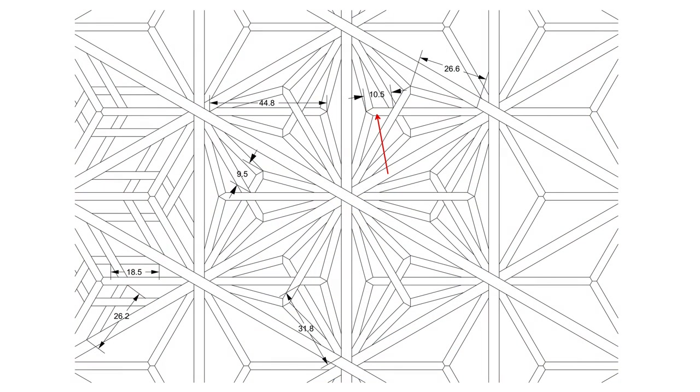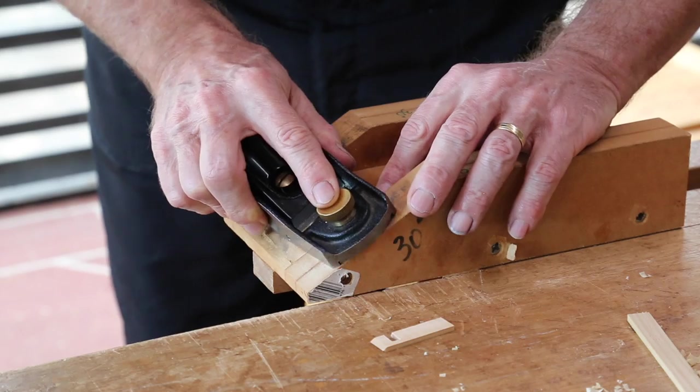Now the type B kumiko. The diagonal length of the short end is 10.5mm, so trim down to that length on the 30 degree jig.